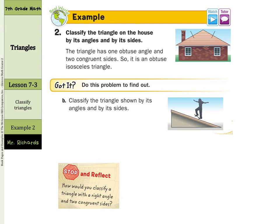What about this triangle? We have this guy on a skateboarding ramp it looks like. And I can see that we have a right angle here. So we definitely have a right triangle. And none of these sides are equal. You can just look and know that none of these sides are equal. So this is a right scalene triangle. Now for our stop and reflect question. How would you classify a triangle with a right angle and two congruent sides? Well again the right angle makes it a right triangle and two congruent sides makes it isosceles. So a right isosceles triangle.